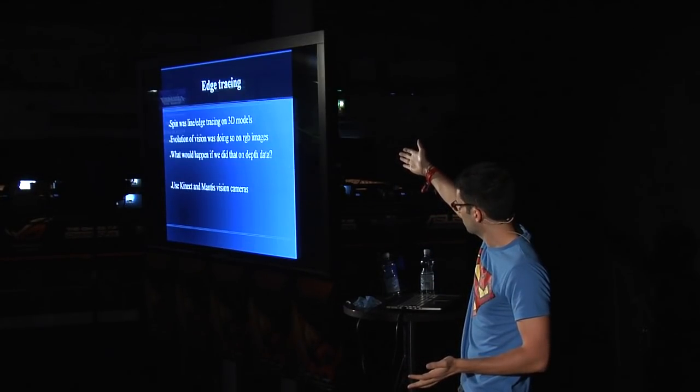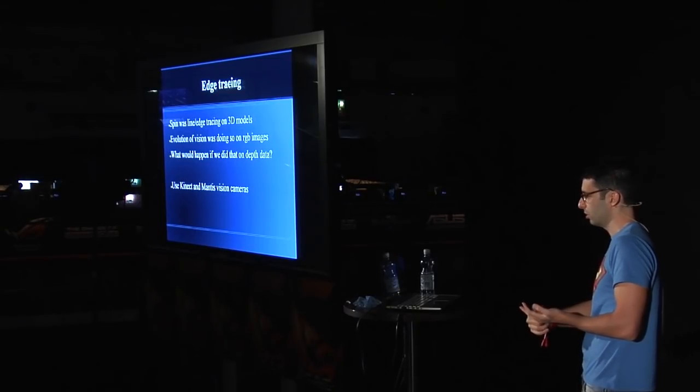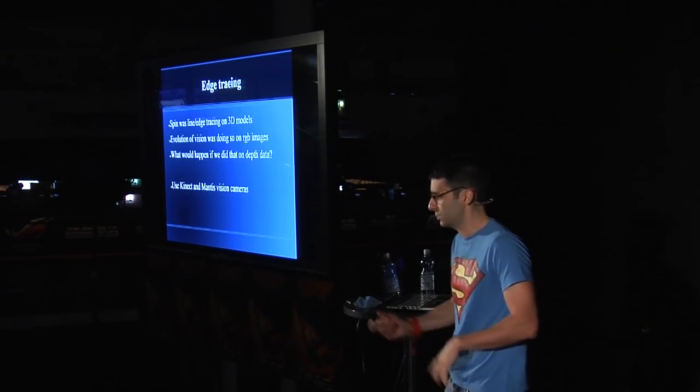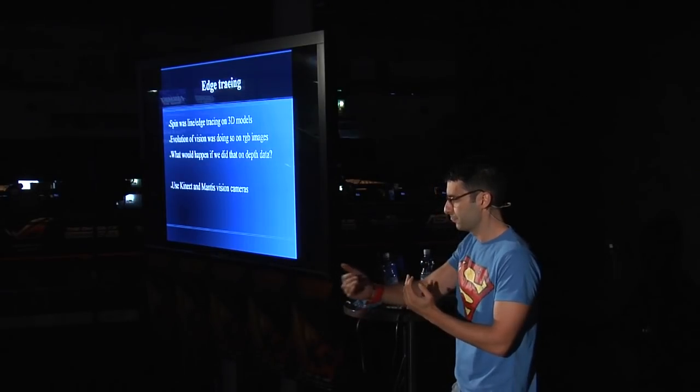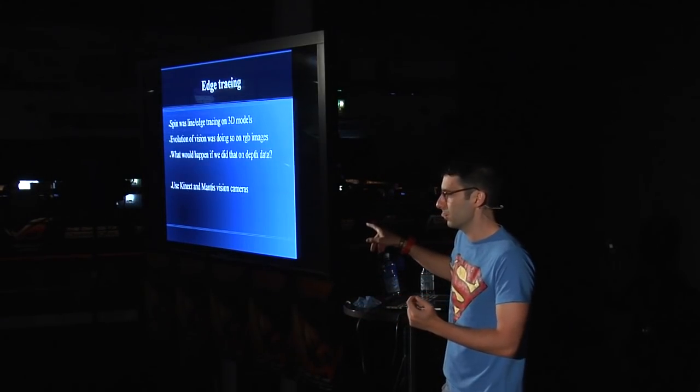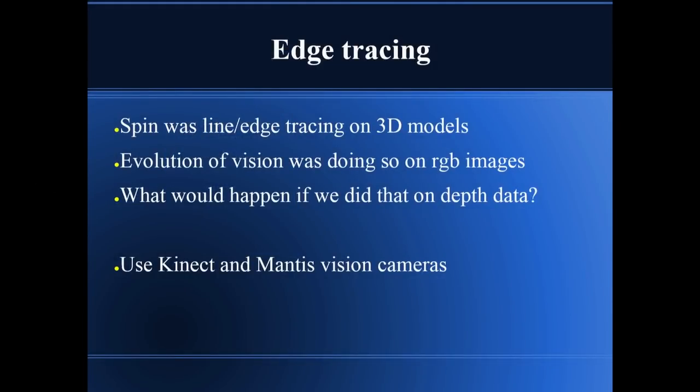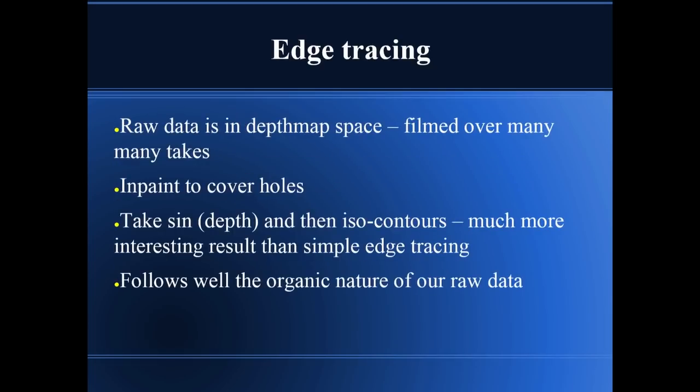Evolution of Vision was something we did about 10 years ago — analyzing RGB images with an AVI playing in the background, RGB video with line tracing and image processing happening in real time. Then I said: what if we used depth data captured using the Kinect? Mantis Vision is a company I work with that does depth cameras and they have better depth resolution. I used both in our demo. There's a long sequence filmed using these cameras with the new line tracing I'm describing here.